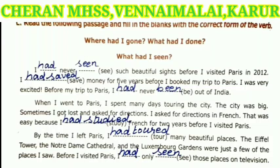Second one: I had saved — S-A-V-E-D — money for five years before I booked my trip to Paris. Third one: I was very excited. Before my trip to Paris, I had never been — B-E-E-N — out of India. When I went to Paris, I spent many days touring the city. The city was big. Sometimes I got lost and asked for directions in French. That was easy because I had studied French for two years before I visited Paris. The answer is had studied, S-T-U-D-I-E-D.